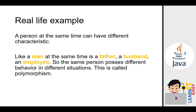Another real-life example of polymorphism: a person at the same time can have different characteristics — for example, a man can at the same time be a father, a husband, or an employee. The same person possesses different behavior in different situations. This is called polymorphism. We can think of the person as the superclass with defined properties and behaviors, similar to what we did with inheritance, and the subclasses like man, father, husband, and employee all inherit from it — one person, but different behaviors.